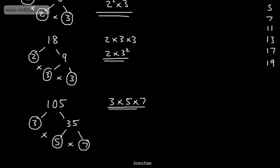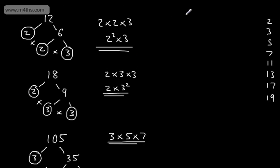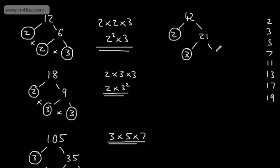Let's do 42. Can I divide that by the first prime number of 2? Yes, that leaves me 21. Can I divide 21 by 2? No. So I try dividing by 3. I can divide it by 3, and that leaves me 7. 7 is a prime number, so 42 as a product of prime factors is 2 × 3 × 7.